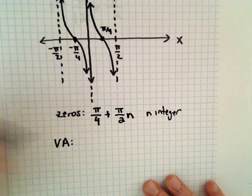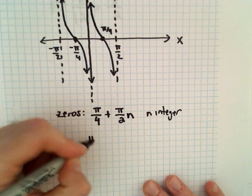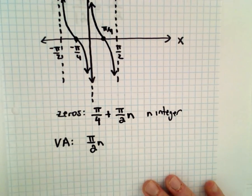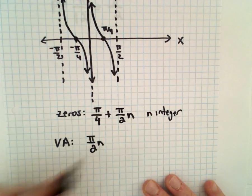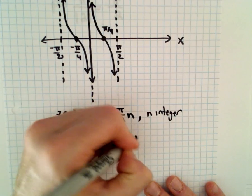And the vertical asymptotes, those occur at multiples of pi over 2, so we can write that as pi over 2 times n, where n is an integer.